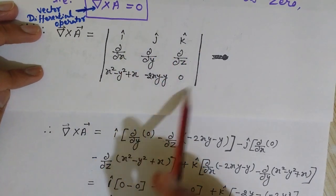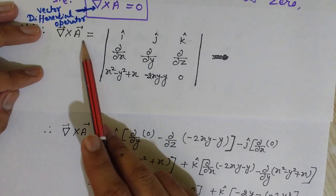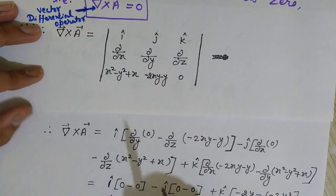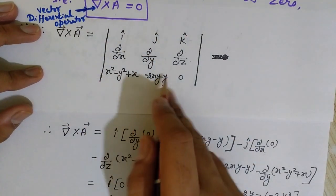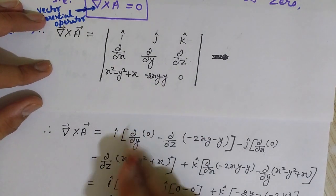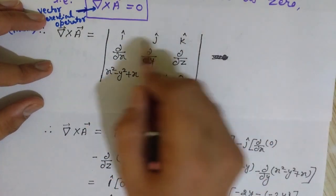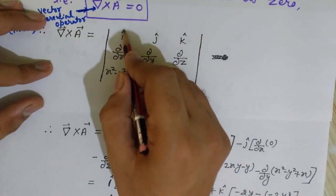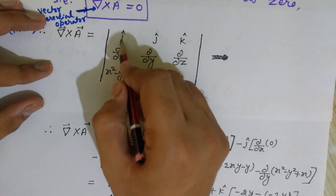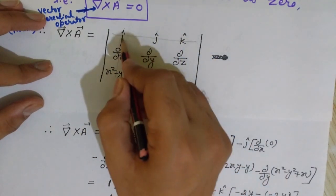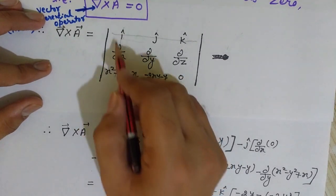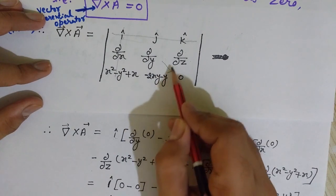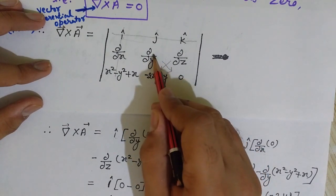Now we just need to solve this determinant and check whether it equals zero. If it is zero, then vector A is irrotational or conservative. We expand along the first row. For the î term, we draw a line through the î column and row and are left with four remaining terms which we cross-multiply.